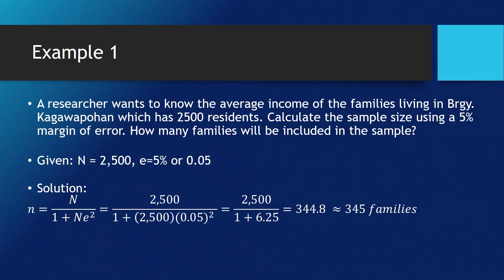We tried to operate first the one that has parentheses. We extracted first 0.05 raised to the power of 2 and the answer of it was multiplied to 2,500 and we got the value of 6.25. The rest are copied, the 2,500 and 1.